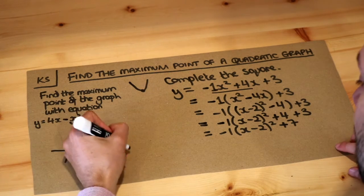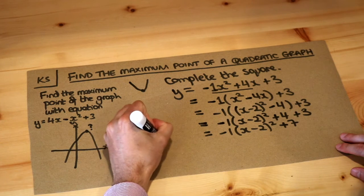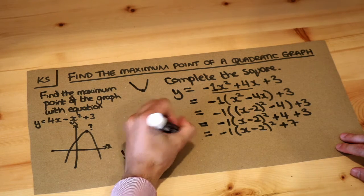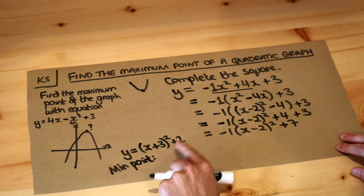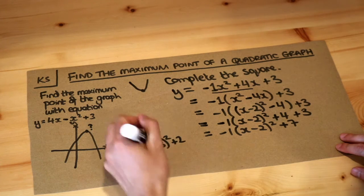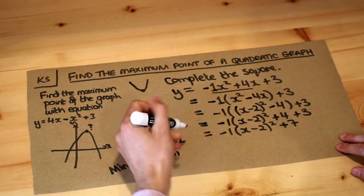Now we previously saw that if we had something like this, we had x plus 3 squared plus 2, and we wanted to find the minimum point, we would negate whatever that number is. So the plus 3 would become minus 3, and we use that value at the end as the y value.